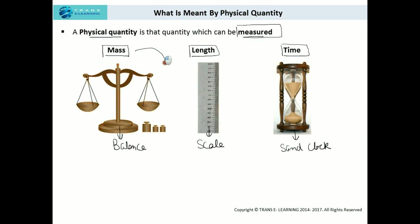Like for example, mass can be measured with the help of the balance, the length can be measured with the help of the scale, while the time can be measured with the help of the sand clock. So to measure any of the physical quantities, we need to have some instrument to measure the values and to get the data. This was the first thing.